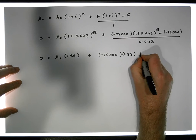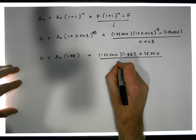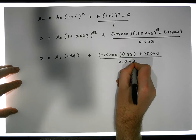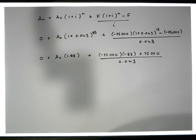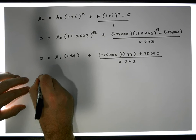Let's just keep that in mind, 0.043. When we work this out here we have zero is equal to 1.88 A0.